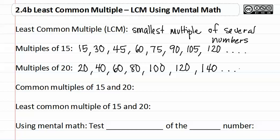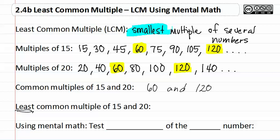If we look at what multiples are common to both fifteen and twenty, we can find the common multiples of these two numbers. We see that they both have sixty in common, and they both also have one hundred twenty in common. So the first two common multiples are sixty and one hundred twenty. But we are looking for the least common multiple, which is the smallest multiple — and the smallest multiple between fifteen and twenty is sixty.